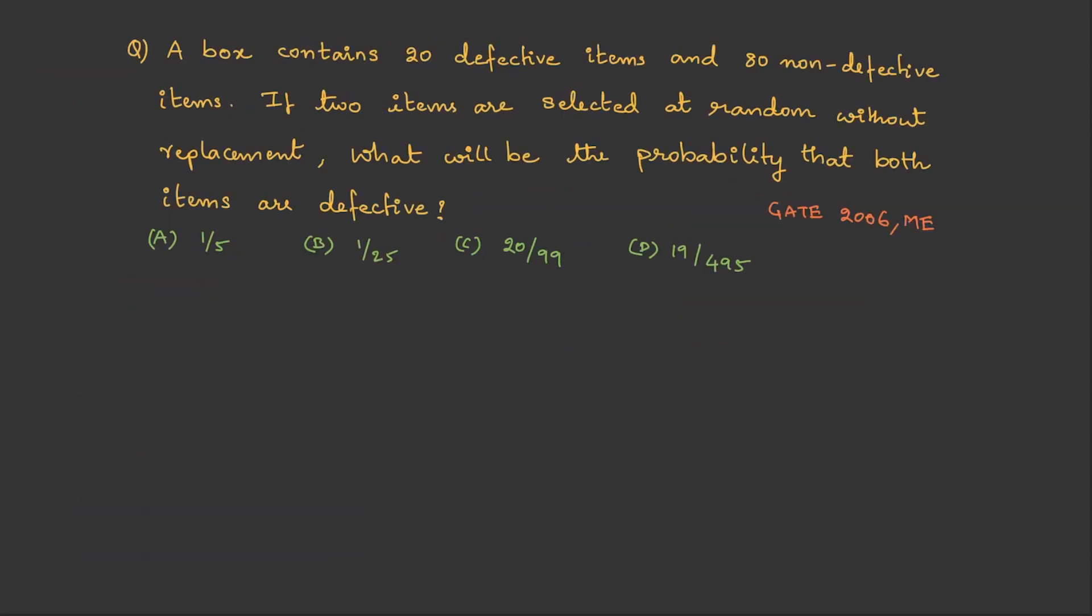Here we have a question from GATE 2006, from mechanical engineering. A box contains 20 defective items and 80 non-defective items. If two items are selected at random without replacement, what will be the probability that both the items are defective?